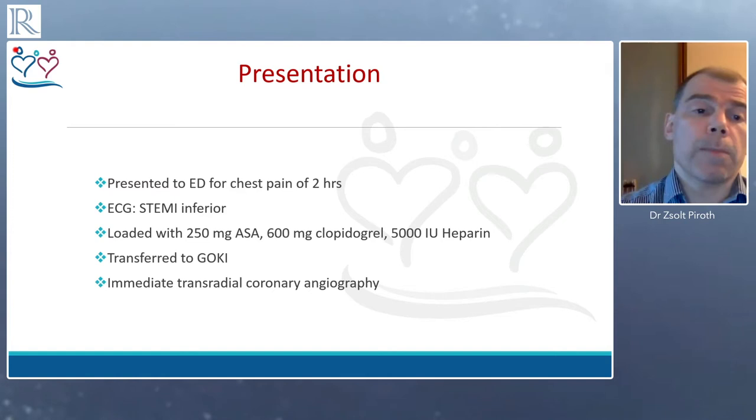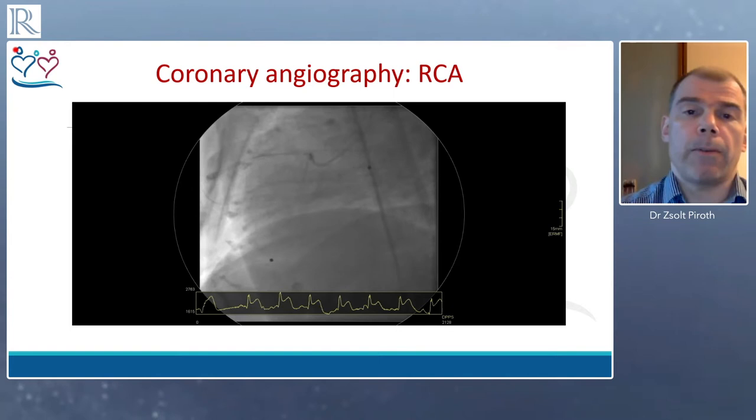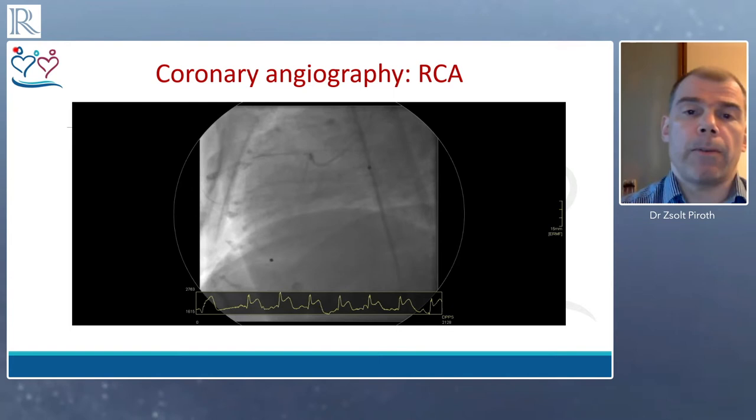As per local practice, she was loaded with 250 mg of aspirin, 600 mg of clopidogrel, and 5,000 units of heparin intravenously. She was immediately transferred to a tertiary care hospital and rushed to the cath lab for transradial coronary angiography. The right coronary artery, the dominant right, is thrombotically occluded, consistent with the ST-segment elevation in the inferior leads.